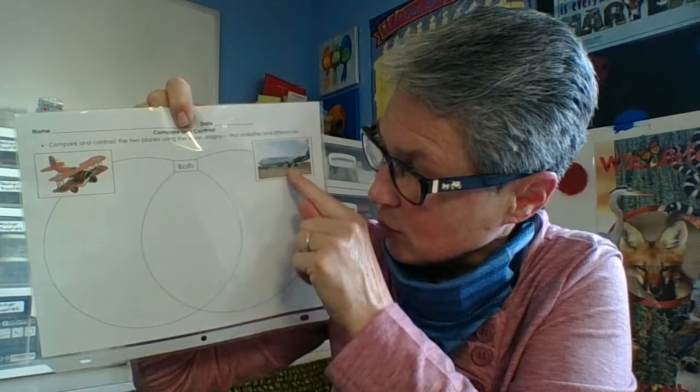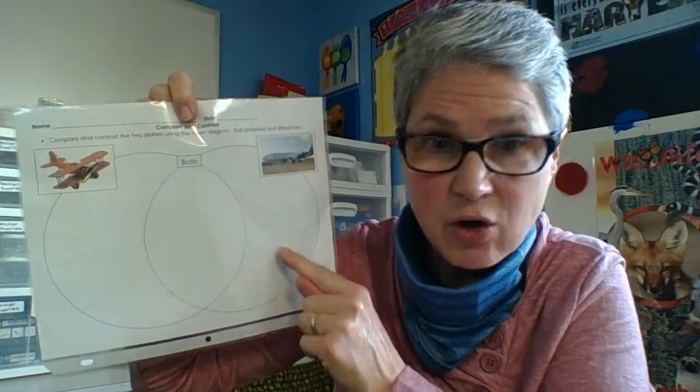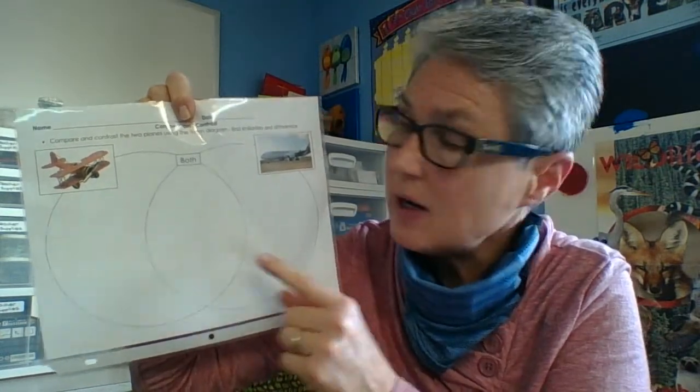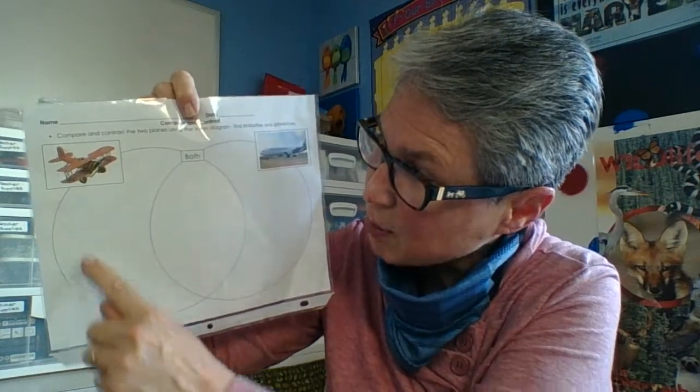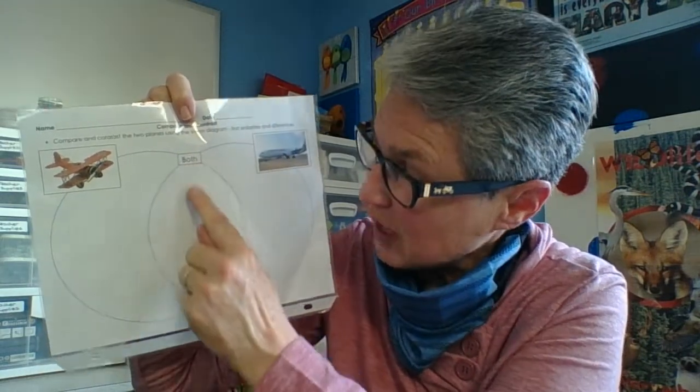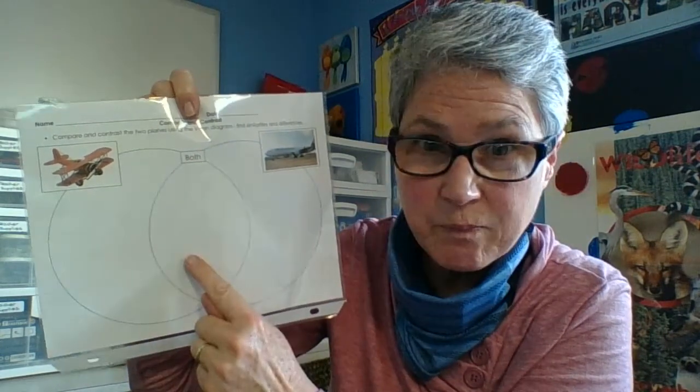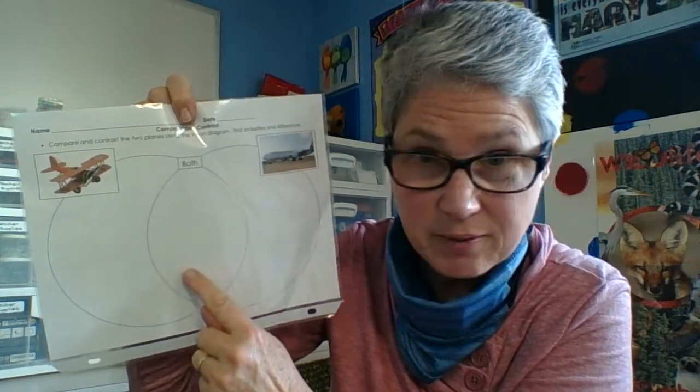Information that belongs just to this plane goes on this side. Information that belongs to this plane goes just on this side and information that they share and compare is right in here.